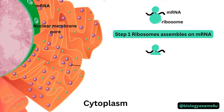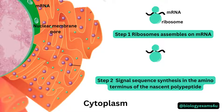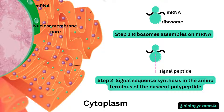Step two is signal sequence synthesis at the amino acid terminus of the nascent polypeptide. The ribosome starts synthesizing a signal sequence, which is a hydrophobic amino acid sequence of 18 to 30 residues that is recognized by the signal recognition particle (SRP), which is a protein.